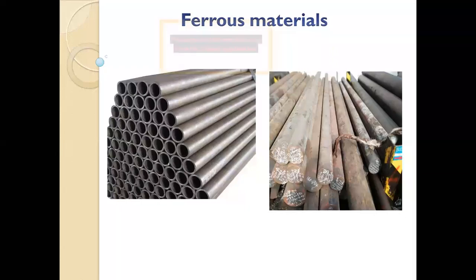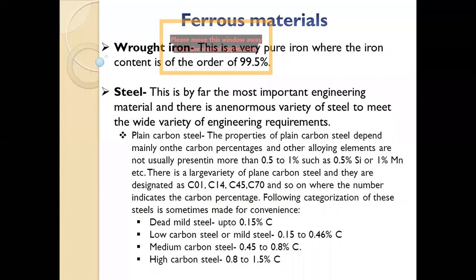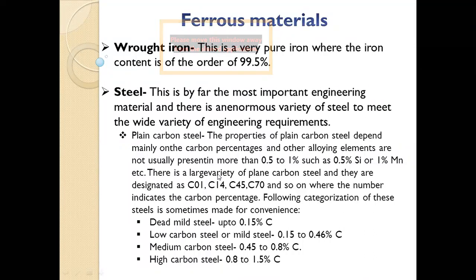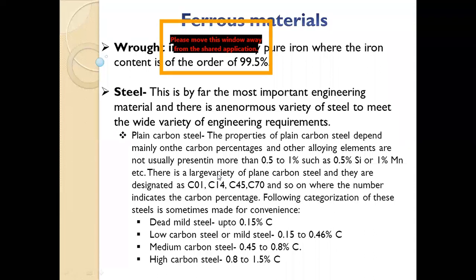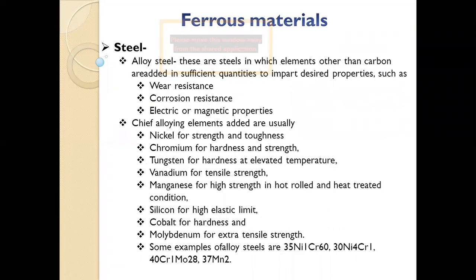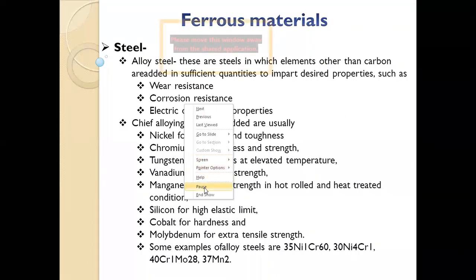Steel is the most commonly used material — for building construction, vehicles, and more. In plain carbon steel, the carbon content is relatively low. We have dead mild steel, low carbon steel with carbon content from 0.15% to 0.45%, medium carbon steel, and high carbon steel with more than about 1% carbon.